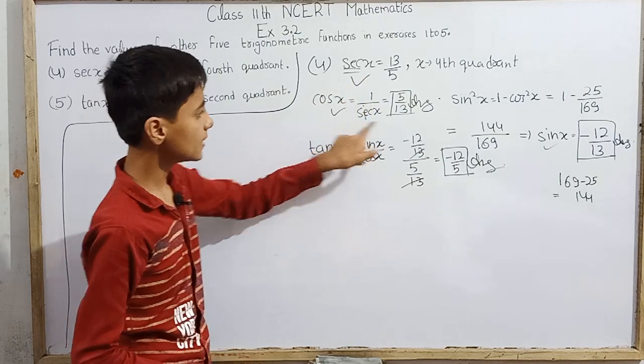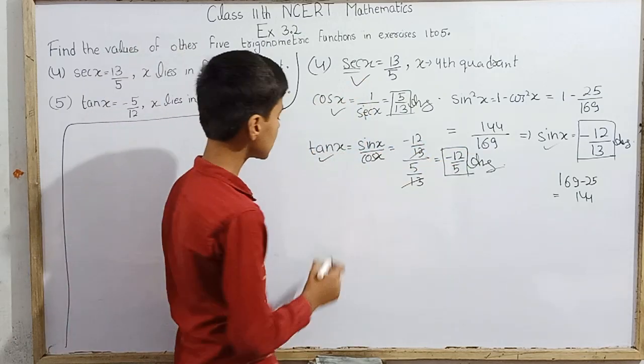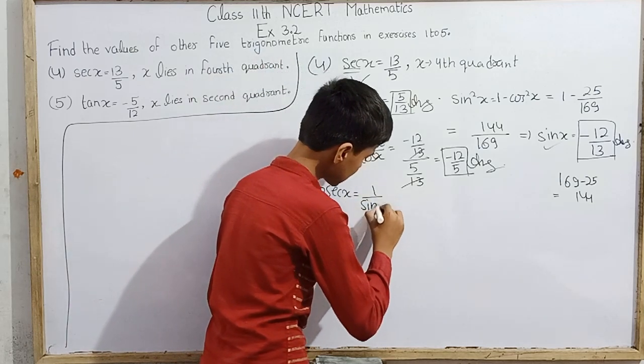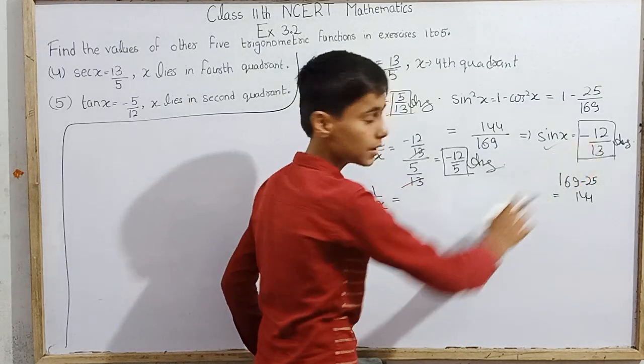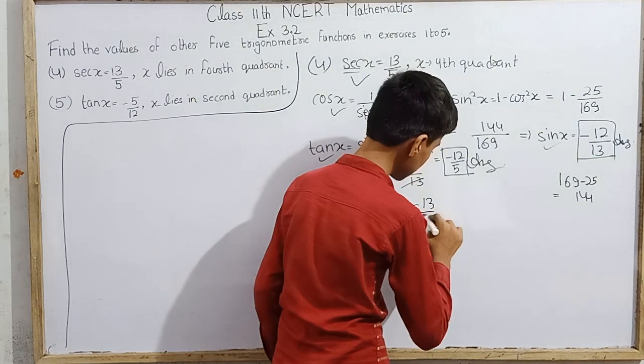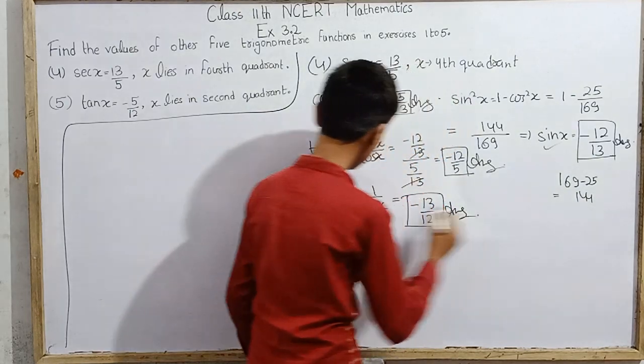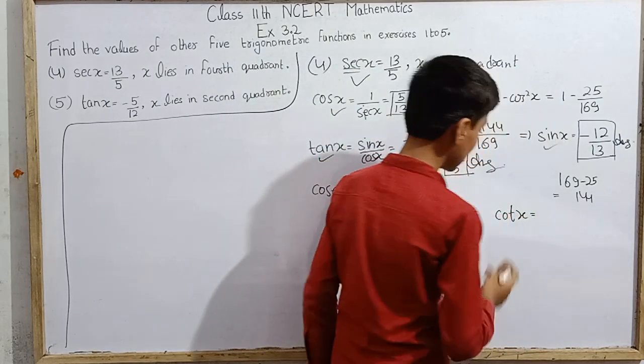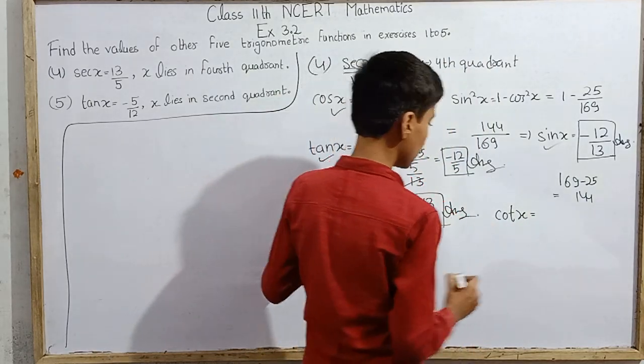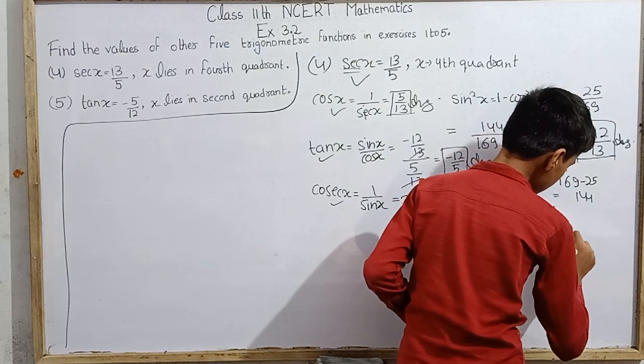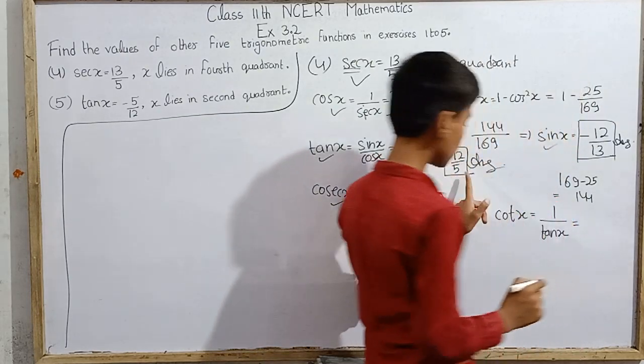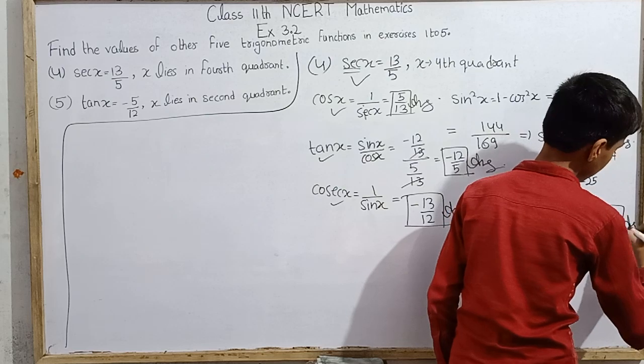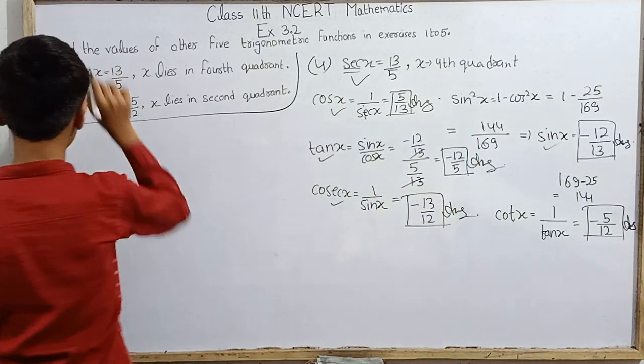For cosec x, which is 1 over sin x, we get minus 13 over 12. Now we have 5 trigonometric functions. The last value is cot x, the cotangent of x. This is 1 over tan x, which equals minus 5 over 12. This is our answer. Fourth question solved.